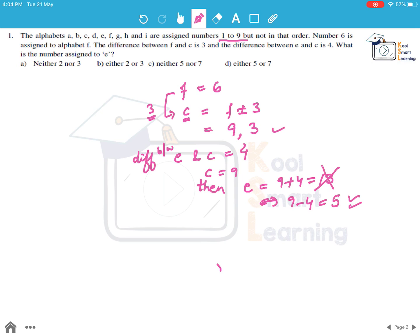The second is if we take C equal to 3, then E will be equal to 3 plus 4 which is 7 or 3 minus 4 which is minus 1. So this is again not an option. So the possible values of E are 5 and 7. So this means either 5 or 7, D is the correct answer.